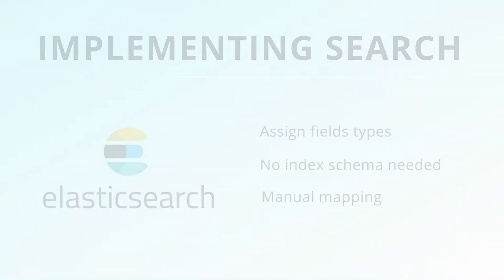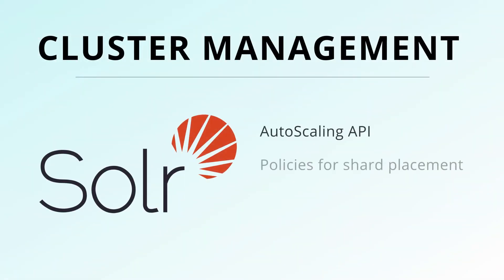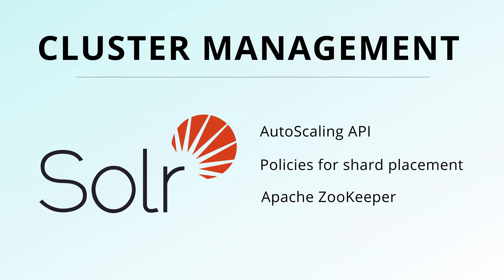Next, we talk about cluster, shard, and node management. Earlier, Solr didn't do anything on its own whenever a node joined or left a cluster. The autoscaling API introduced in Solr 7 solves this by letting you define cluster-wide and collection-specific policies that control shard placement.